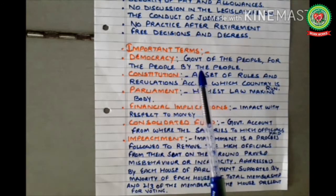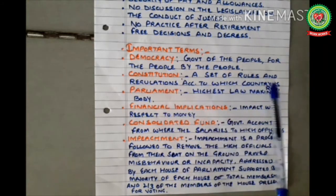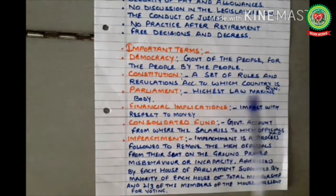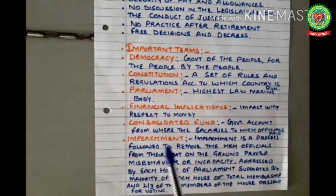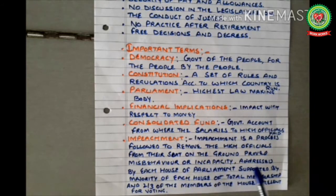Democracy means government of the people, for the people, by the people. Constitution is a set of rules and regulations according to which a country is run. Parliament is the highest law-making body. Financial implications means impact with respect to money. Consolidated fund is a government account from where salaries to high officials are paid. Impeachment is a process followed to remove high officials from their seat on grounds of proved misbehavior or incapacity, addressed by each house of parliament, supported by majority of total membership and two-thirds of the members present for voting.